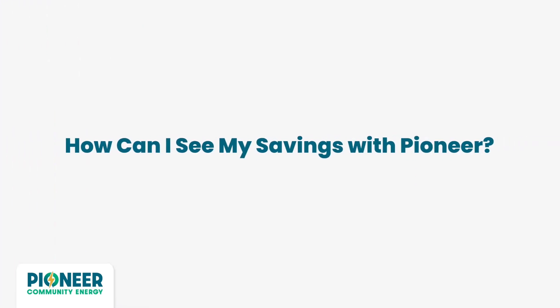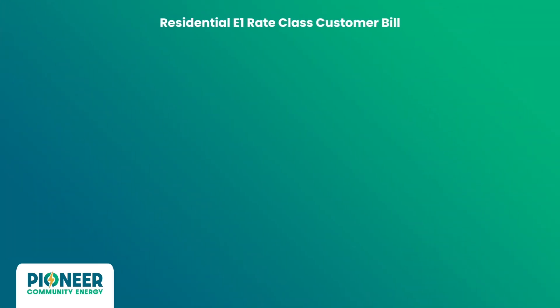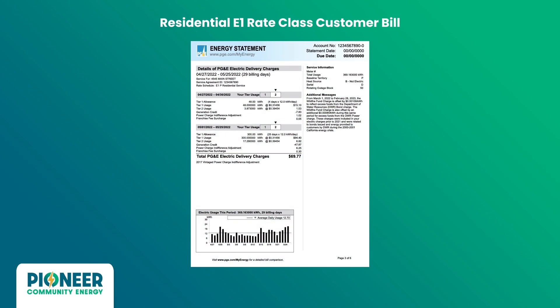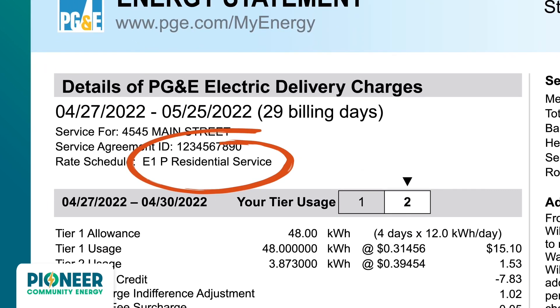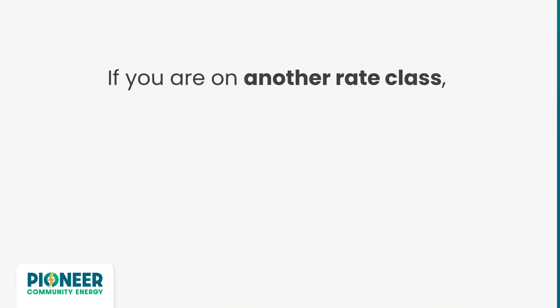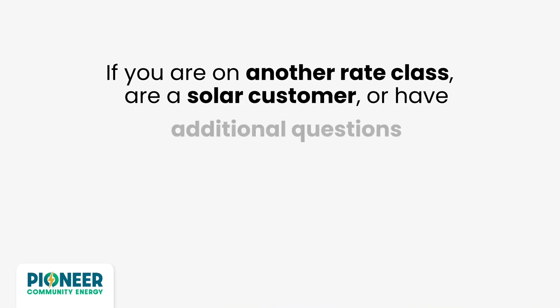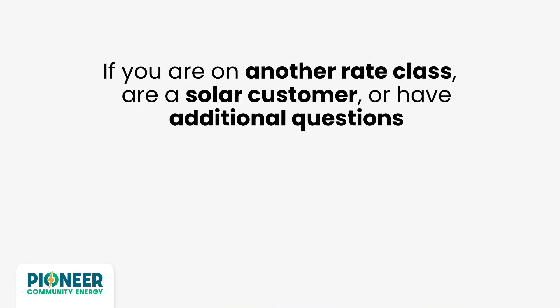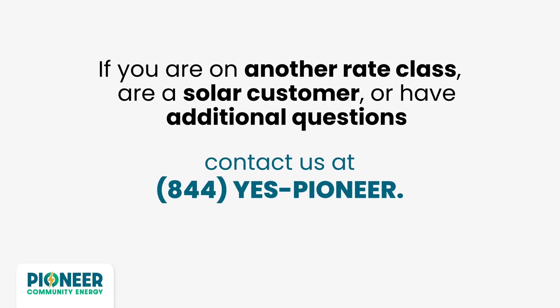How can I see my savings with Pioneer? This video will address a typical residential E1 rate class customer bill, including layout and page numbers. Find your rate class here. If you are on another rate class, are a solar customer, or have any additional questions, please contact Pioneer directly. We are happy to help.